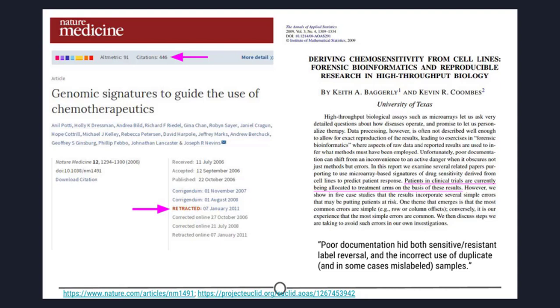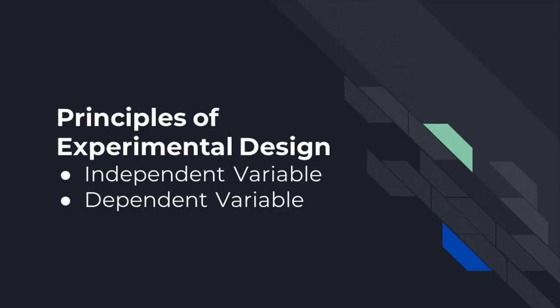In that time, this data — later shown to have numerous problems in setup and cleaning — was cited in nearly 450 other papers that may have used these erroneous results. On top of this, wrongly analyzed data was used in clinical trials to determine cancer patient treatment plans. When the stakes are this high, experimental design is paramount.